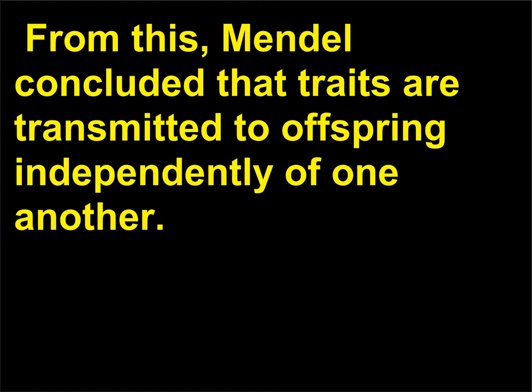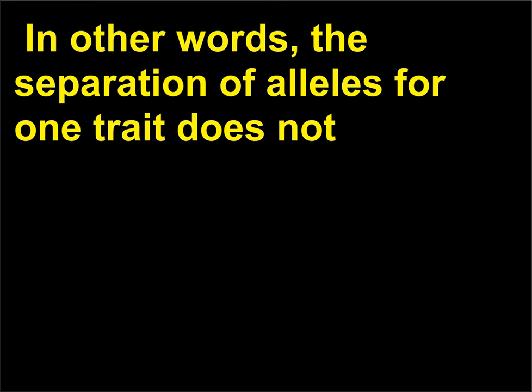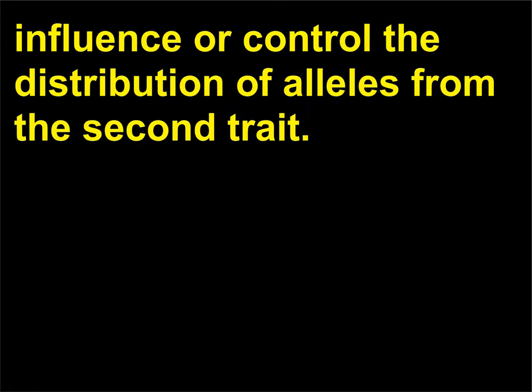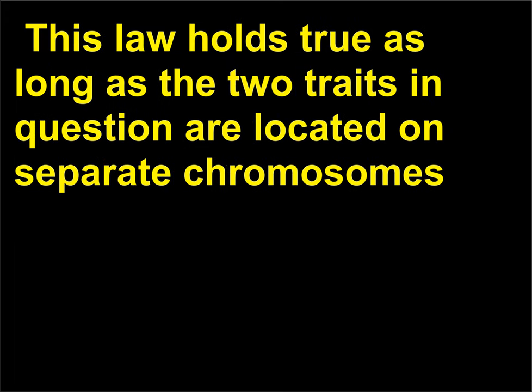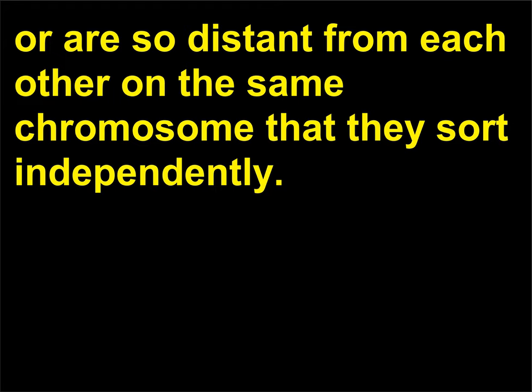From this, Mendel concluded that traits are transmitted to offspring independently of one another. In other words, the separation of alleles for one trait does not influence or control the distribution of alleles from the second trait. This law holds true as long as the two traits are on separate chromosomes or are so distant from each other on the same chromosome that they sort independently.